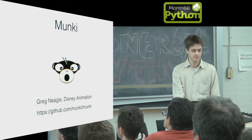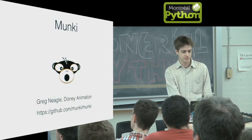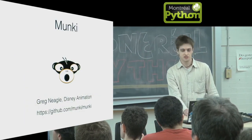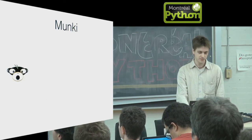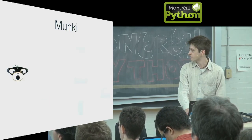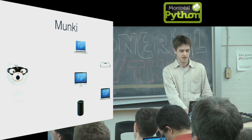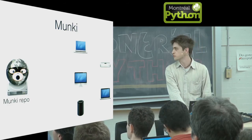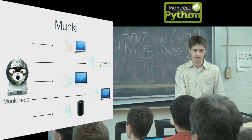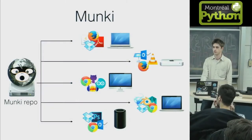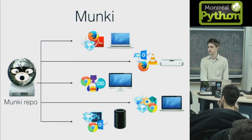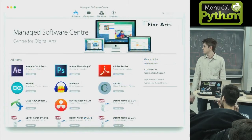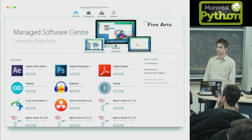The first one is called Munki. It's a system for managing software installations and removals on Mac clients. It's written by Greg Nagel at Disney Animation. Basically, you have your clients, you have a package repository, and clients pull that package repo and pull whatever software has been designated for them. It can be very specific if you want as an admin, or users get to use a self-service application that looks a lot like the Mac App Store.